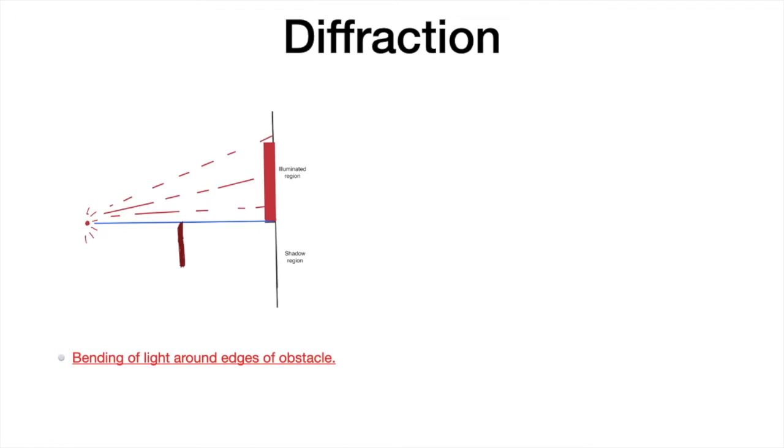Let us take an example of an obstacle as a knife edge which is kept in front of a point source of light. The point source will give out a spherical wavefront which will be propagating in the forward direction. The wavefront coming out from the point source will be obstructed by the knife edge and then it will reach the screen.